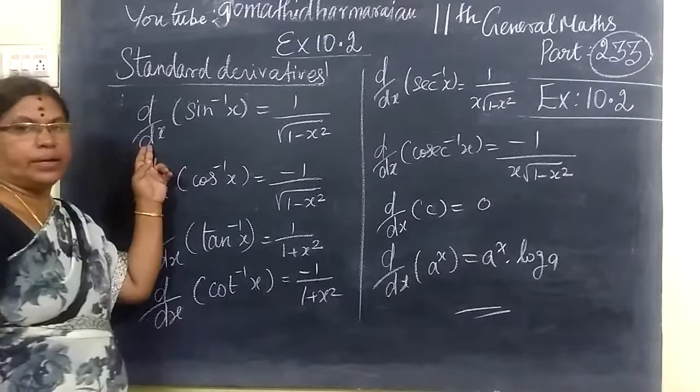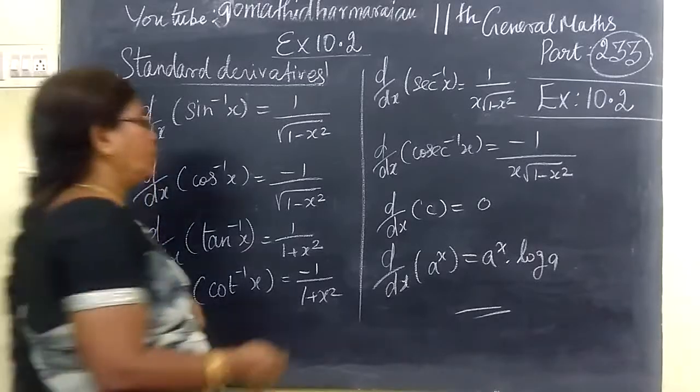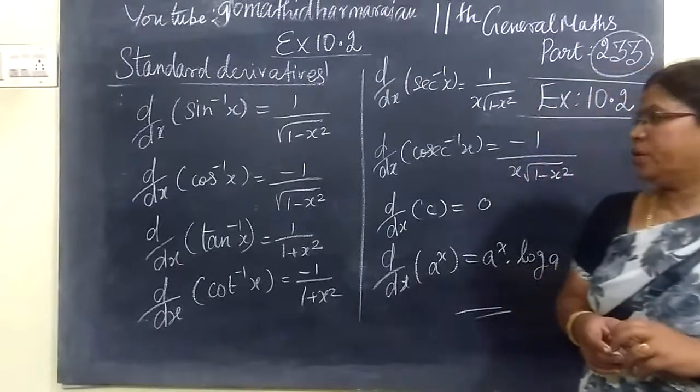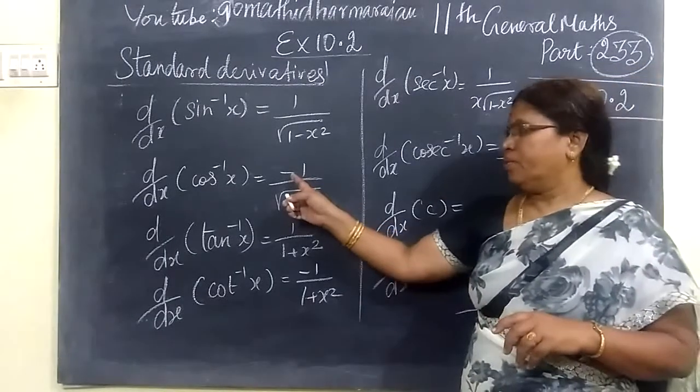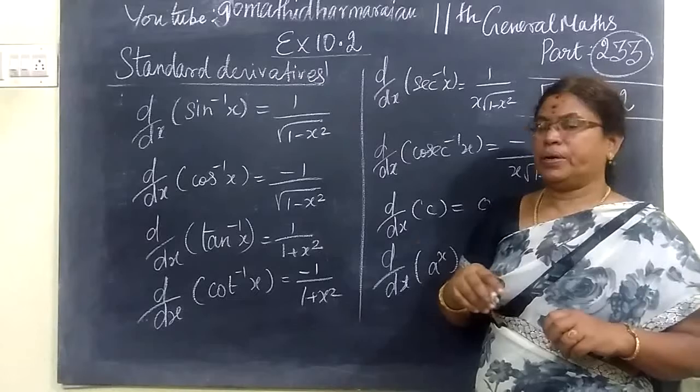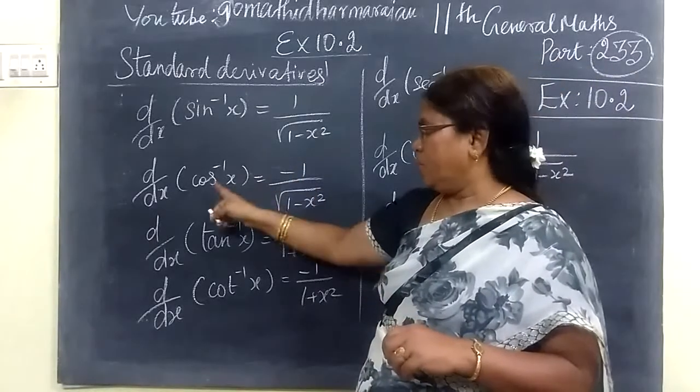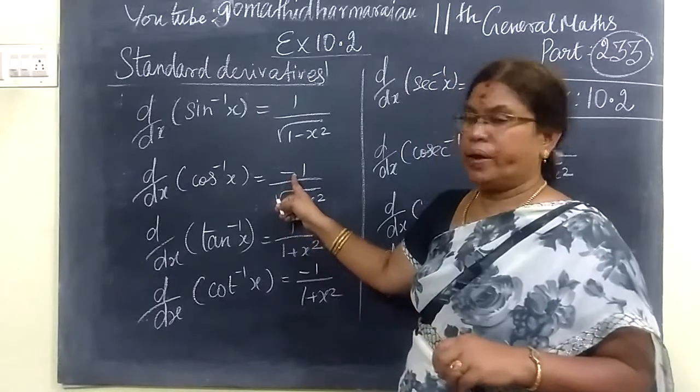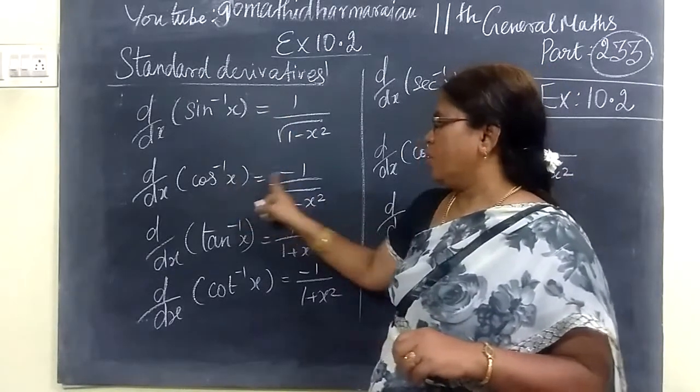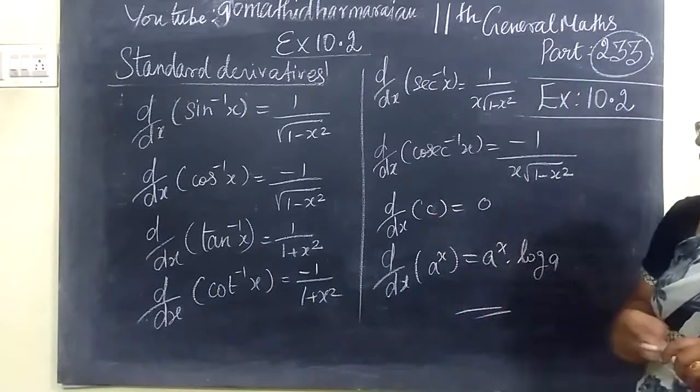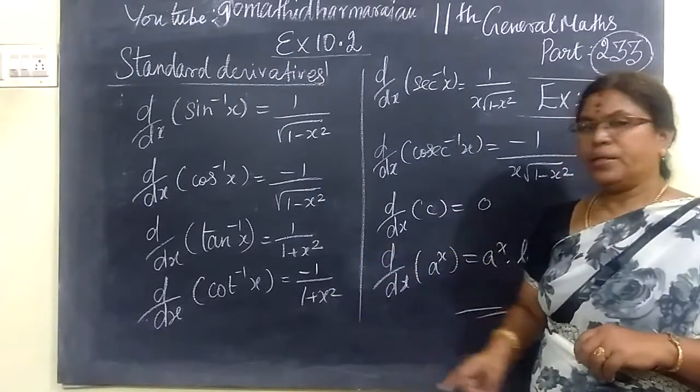d/dx of sin⁻¹x equals 1/√(1-x²). d/dx of cos⁻¹x is -1/√(1-x²). In cos inverse it will be minus 1. In sin inverse there is no minus. Then tan⁻¹x, the root 1 is 1, so we write 1/(1+x²). Then cot⁻¹x is -1/(1+x²).